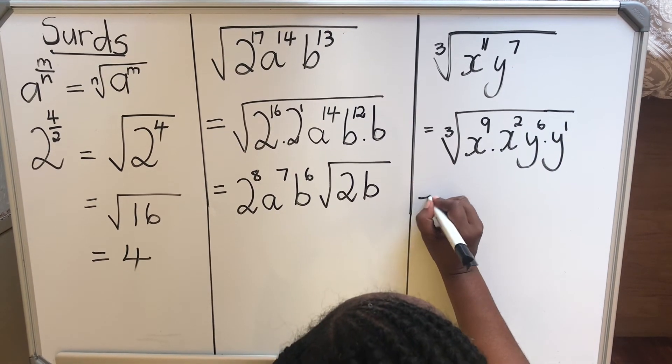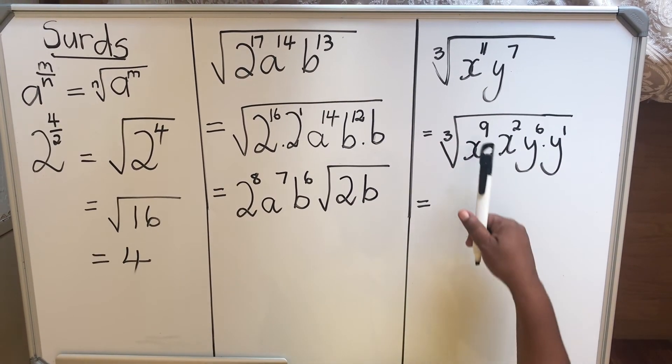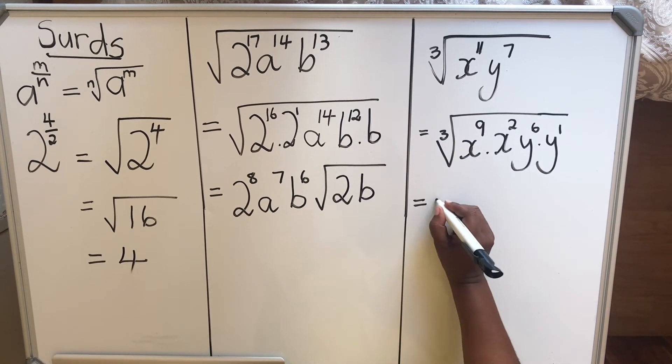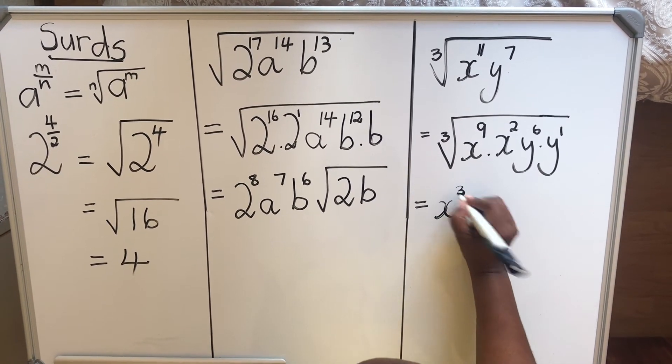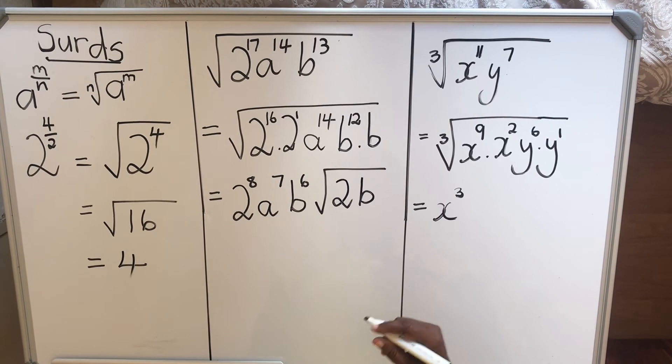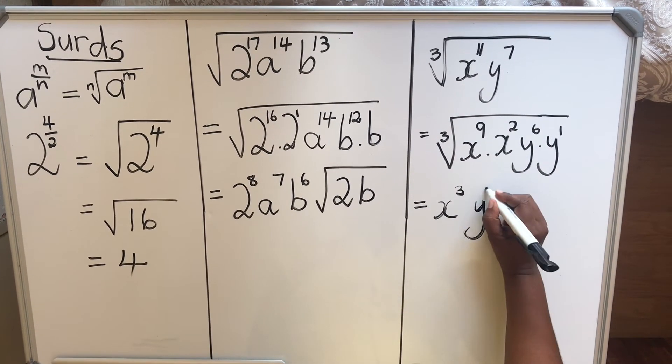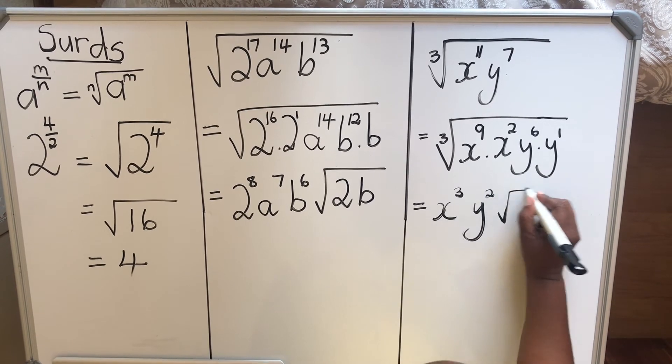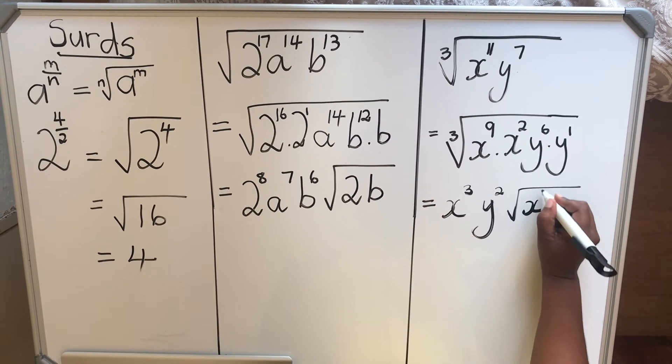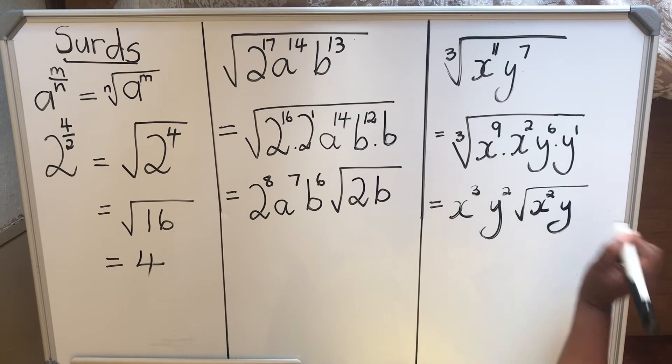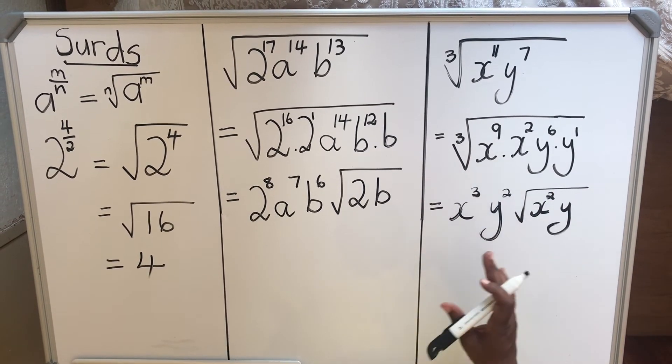Now, according to that rule, we're going to divide the 9 by 3. 9 divided by 3 will give you 3. And then we're going to divide the 6 by 3, then we'll get y to the power 2. Then what will be left inside the radical is x squared and y. So this is how we do it.